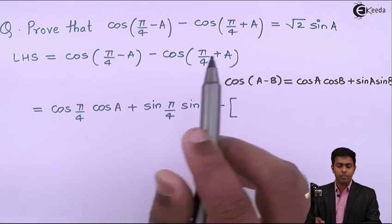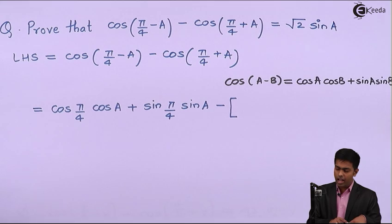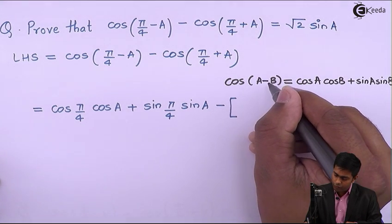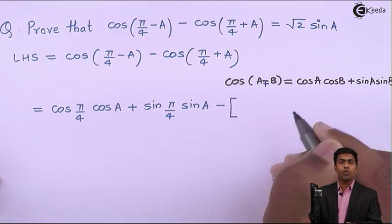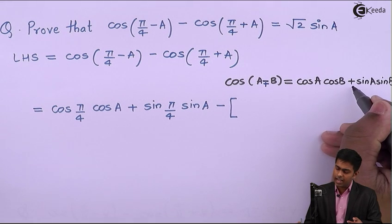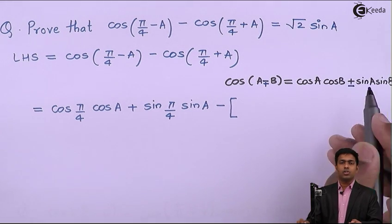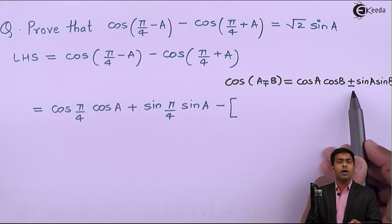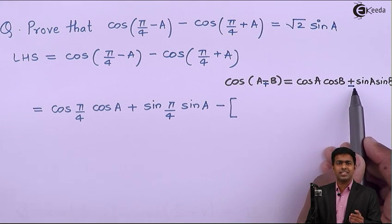In the second term also we have a formula of cos(A + B). So whenever we have a plus sign in the same formula, we just change the sign on the right hand side, so this plus will become minus.